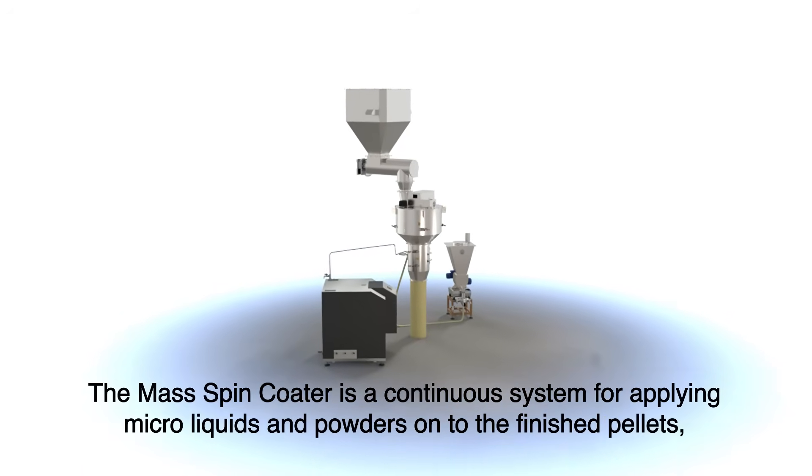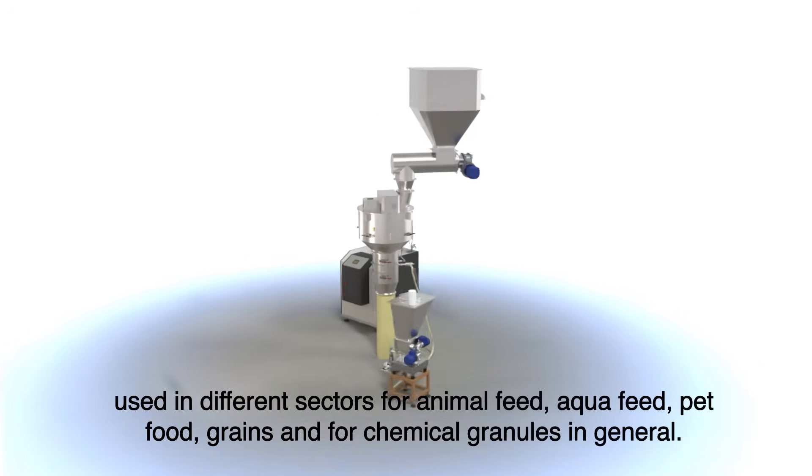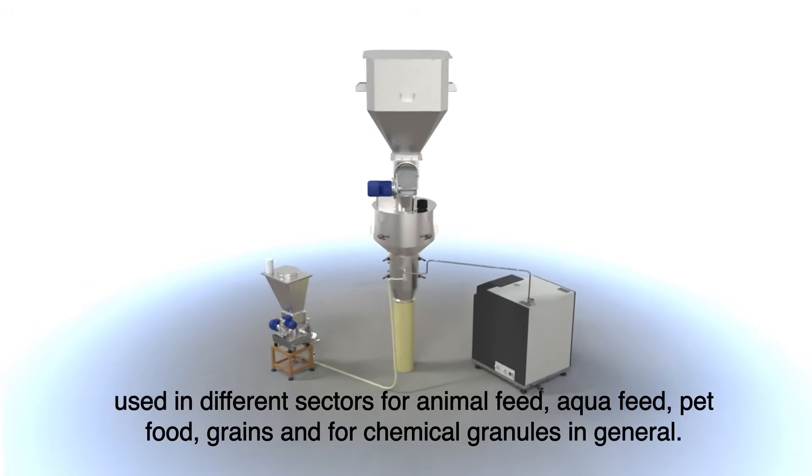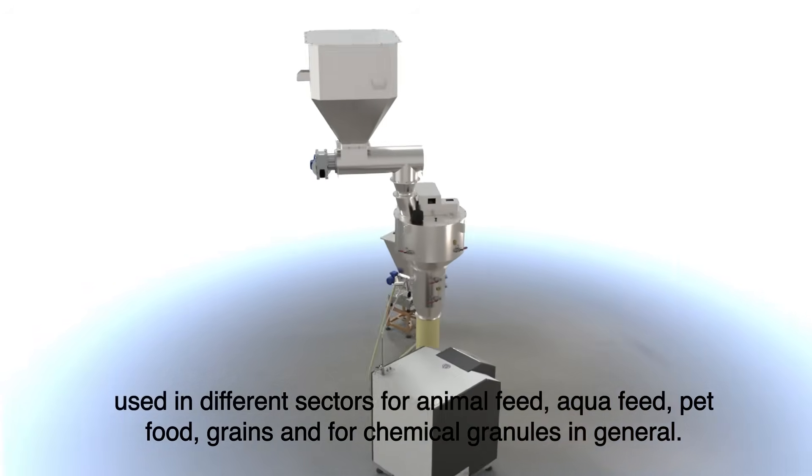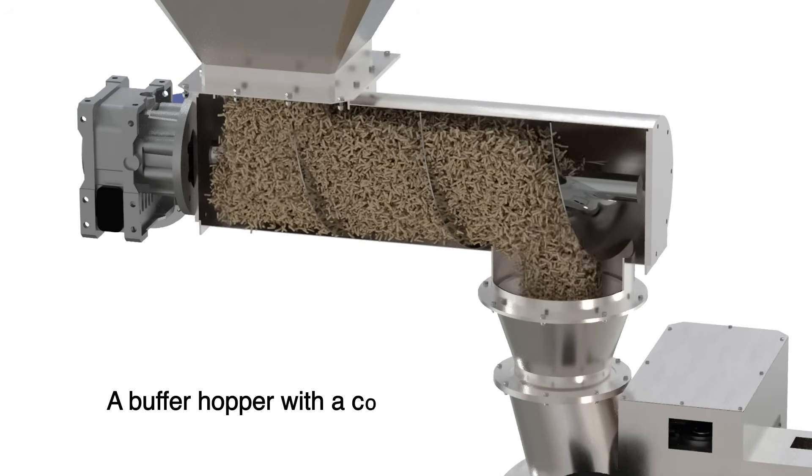The MassSpincoater is a continuous system for applying microliquids and powders onto finished pellets, used in different sectors for animal feed, aqua feed, pet food, grains, and for chemical granules in general.